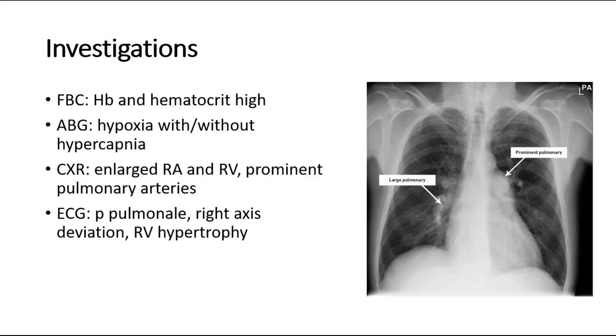On chest X-ray, we can look for an enlarged right atrium and right ventricle, and also prominent pulmonary arteries, which is shown in the picture over here.